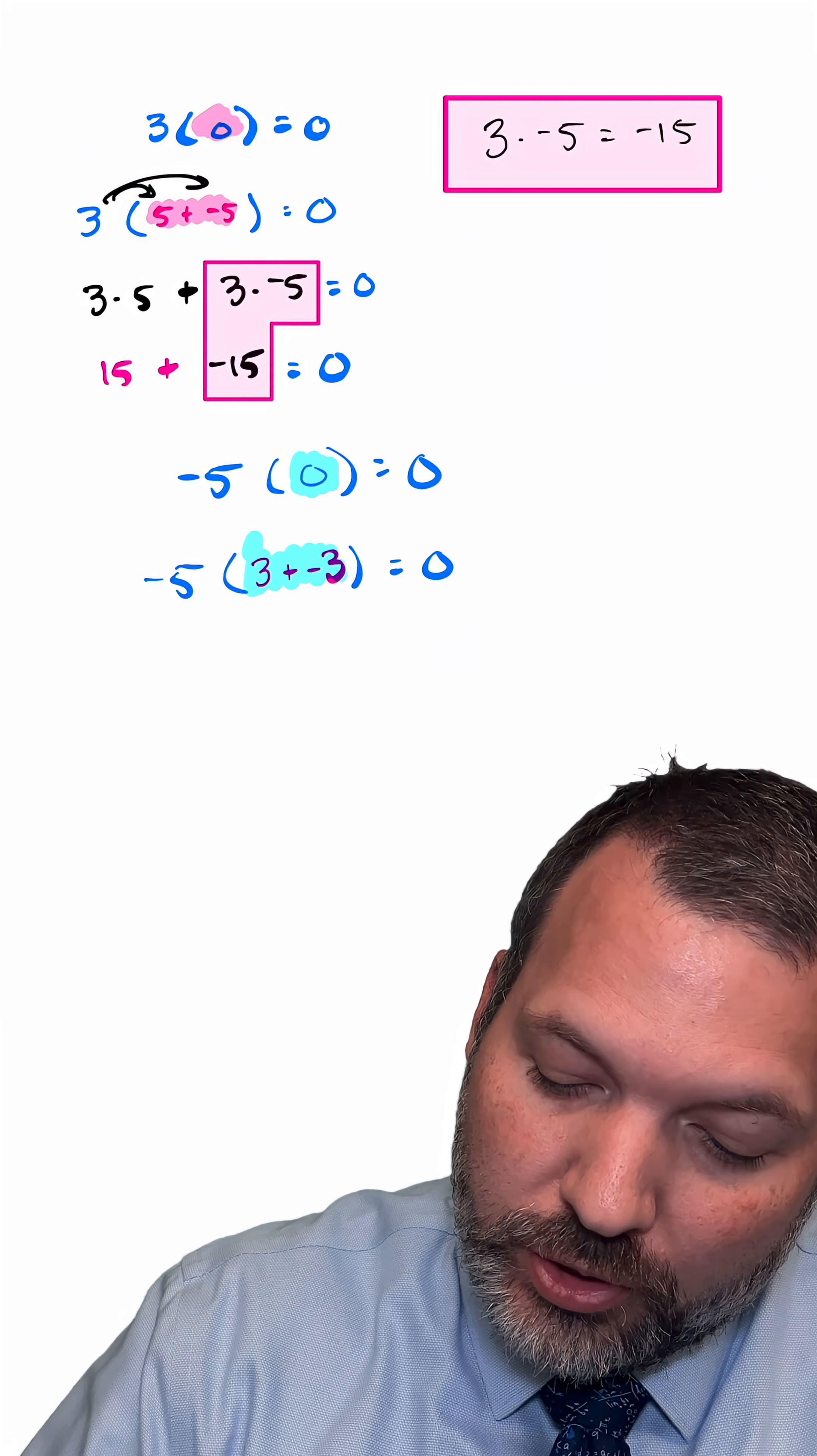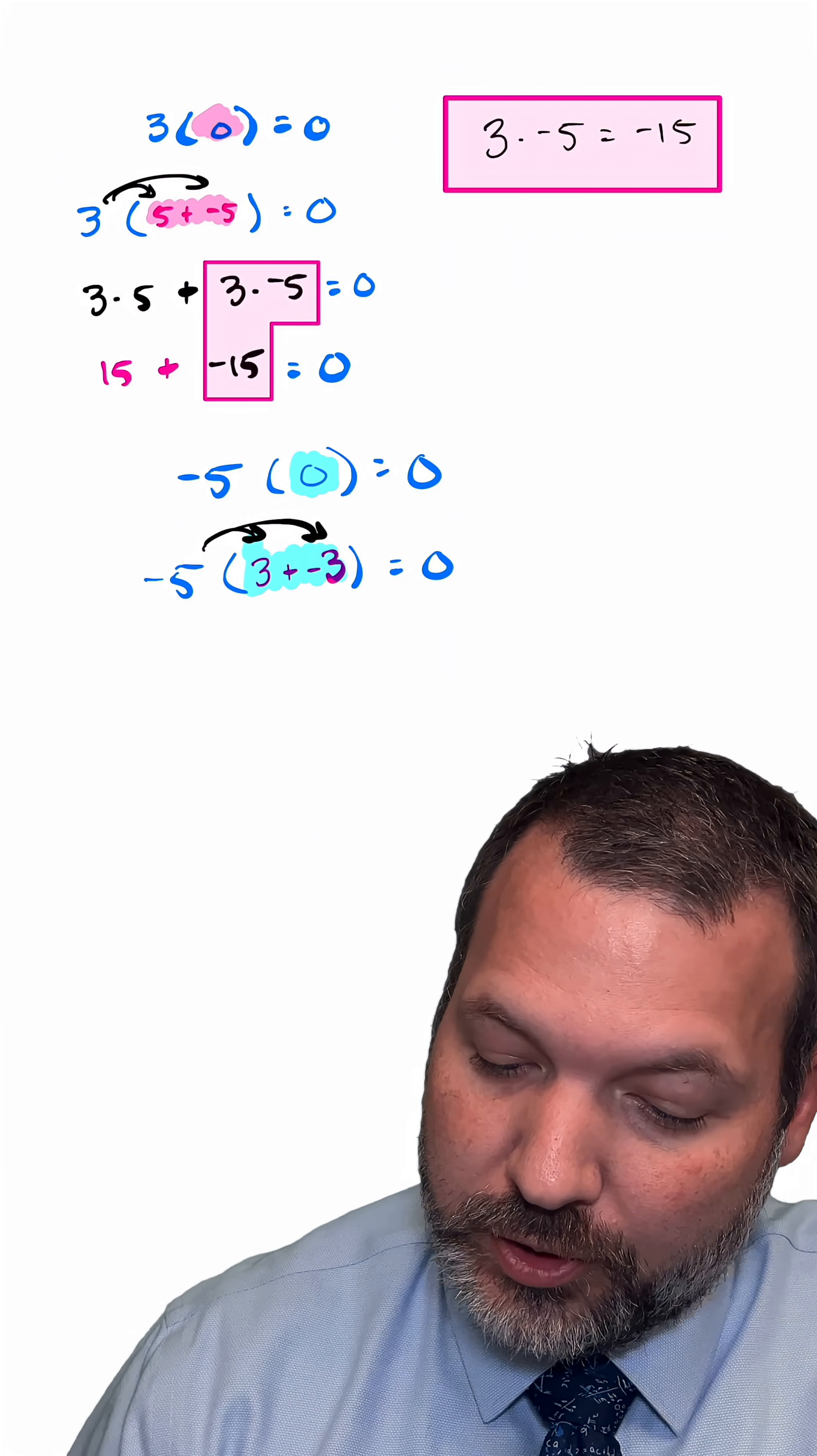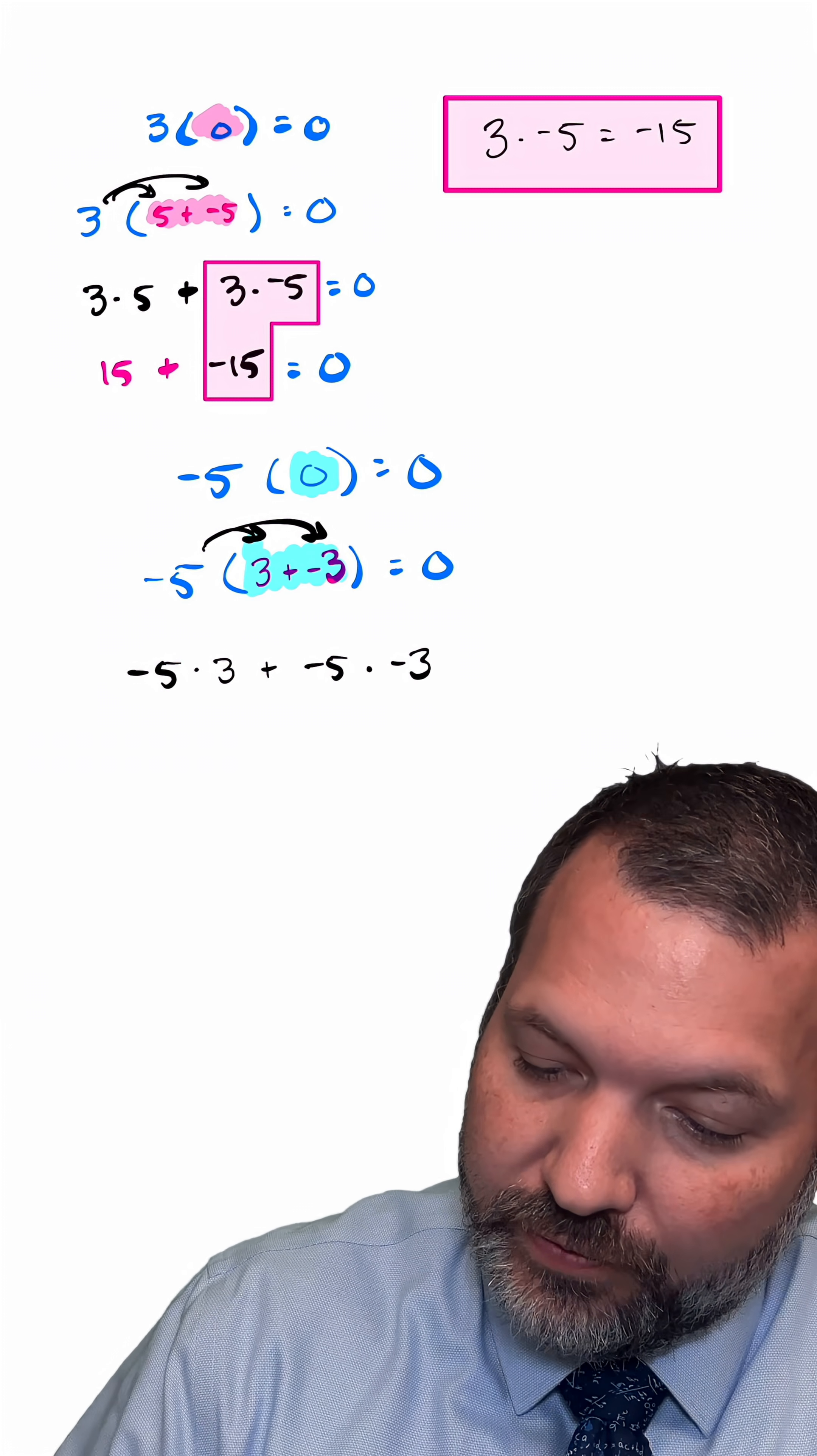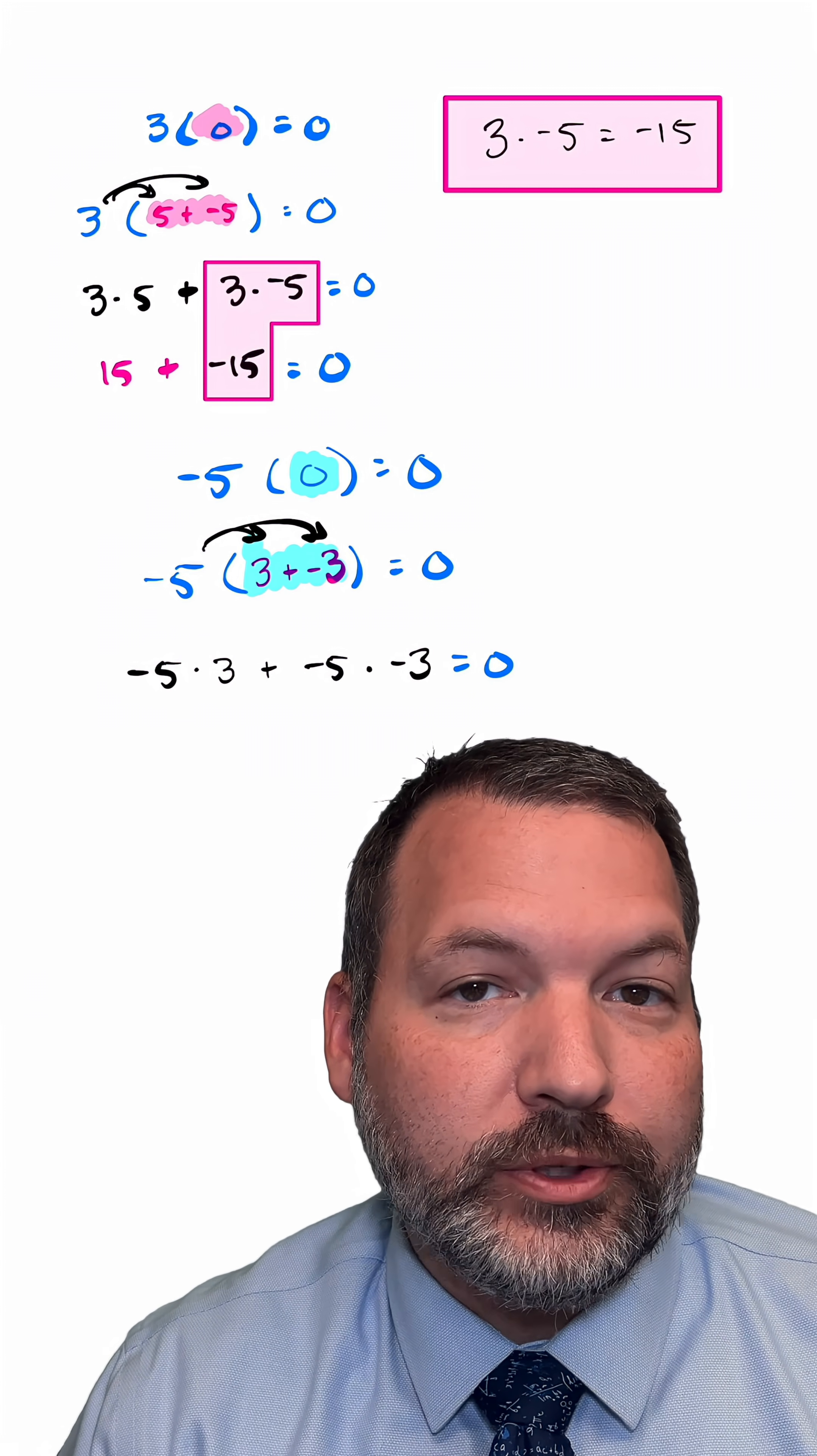Once again, we're going to use the distributive property and multiply that negative 5 onto the inside of those parentheses. So that's going to give us negative 5 times 3 plus negative 5 times negative 3. And again, since we haven't really changed anything, that whole thing should be equal to 0.